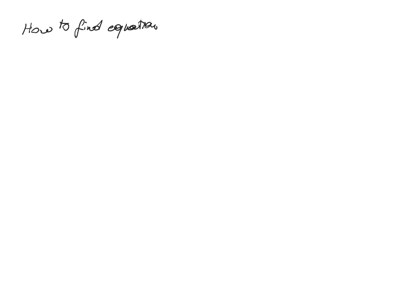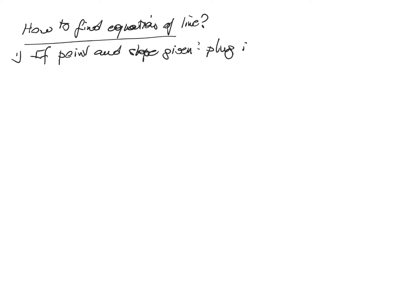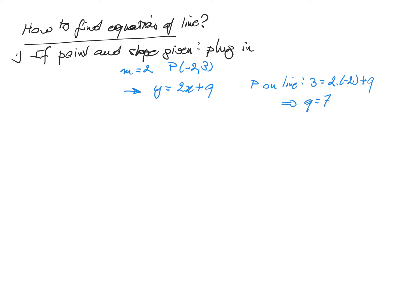How can we find the equation of a line? This depends on what we know. If a point and the slope are given, we just plug in. Assume the slope m equals 2 and the point (-2, 3) is on the line. Using the formula y equals 2x plus q, and substituting: 3 equals 2 times (-2) plus q, so q equals 7. Thus the equation of the line is y equal to 2x plus 7.